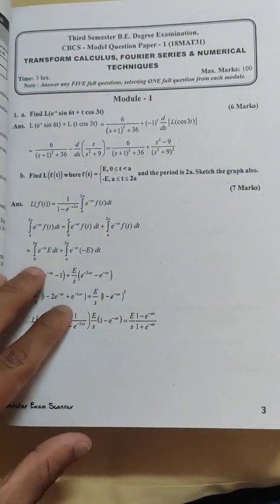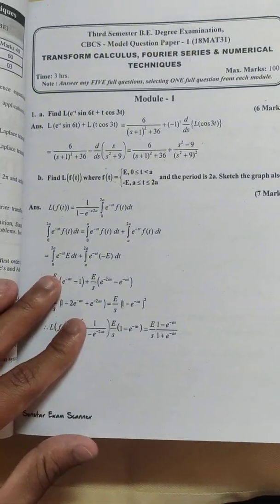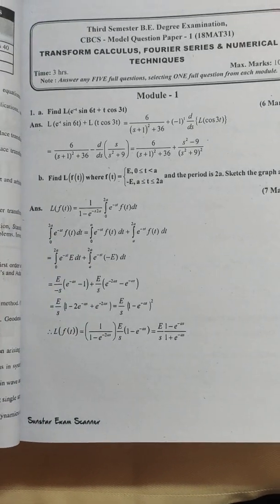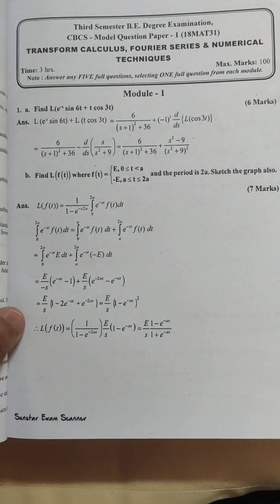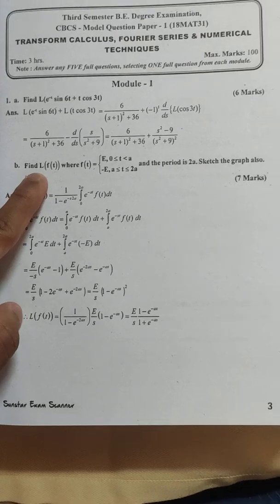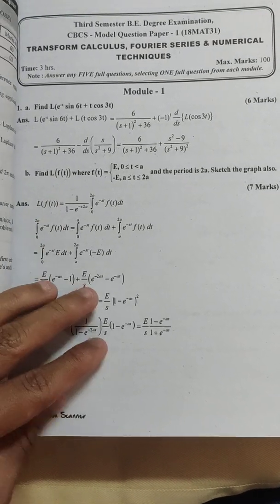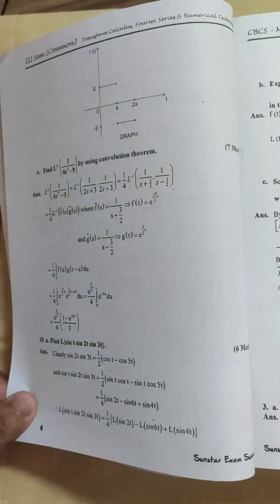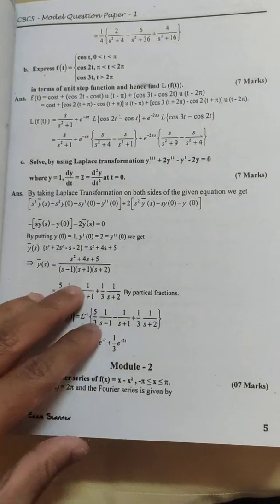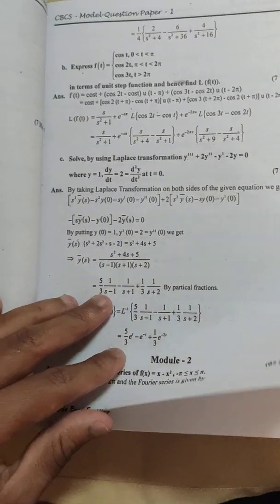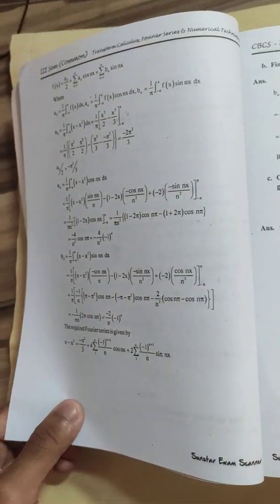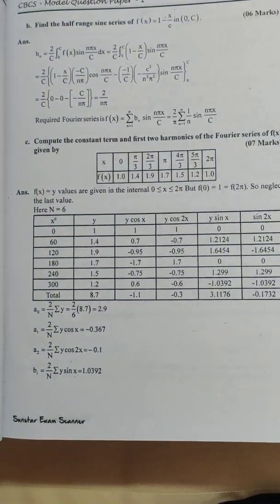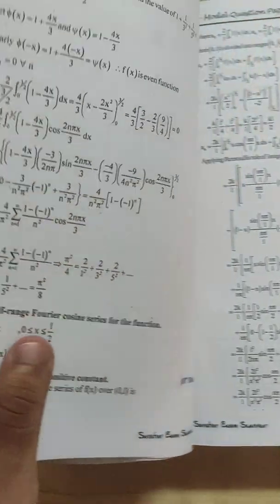As you all know there are 5 modules and each module might contain 2 or 3 chapters and each module carries 20 marks. So you can see 6 marks, 7 marks. Somewhere solutions are short, in other solutions are big, depending on the problem. However if you are writing an exam you need to elaborate it enough so that you can get the step and the main answer marks.